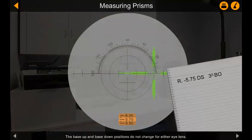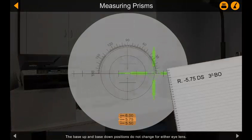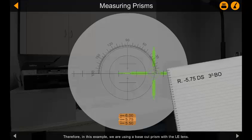The base up and base down positions do not change for either eye lens. Therefore, in this example we are using a base out prism with the left eye lens, hence the green corona is displaced outwards. Measure the left eye lens and record your final prescription.